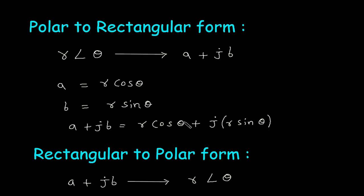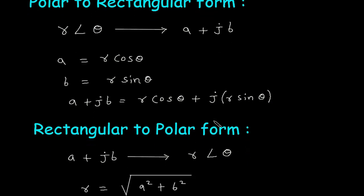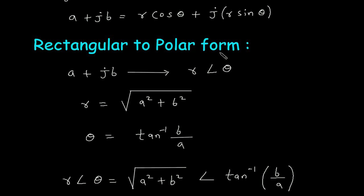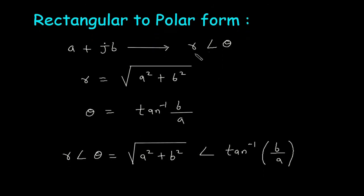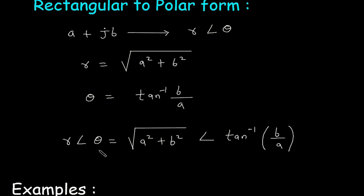We can also take R common from these two. To convert rectangular to polar form, A plus jB is the rectangular form. We convert it into its equivalent polar form R at an angle of theta. R is equal to the square root of A squared plus B squared, and theta is equal to tan inverse of B by A. Therefore, R at an angle of theta equals the square root of A squared plus B squared, at an angle of tan inverse of B by A.